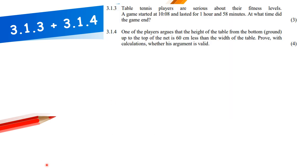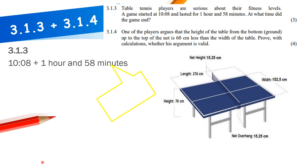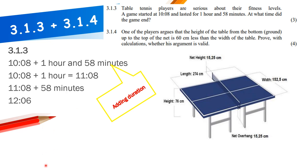A game started at 10:08 and lasted one hour and 58 minutes. At what time did it end? Add one hour to get 11:08, then add 58 minutes to arrive at the end time of 12:06. Because it's time on a clock, we write it with a colon: 12:06.